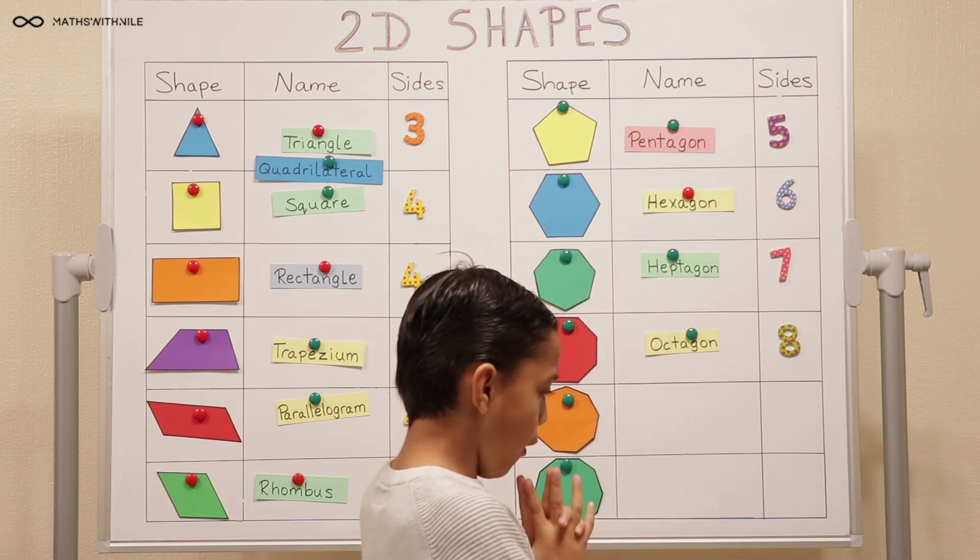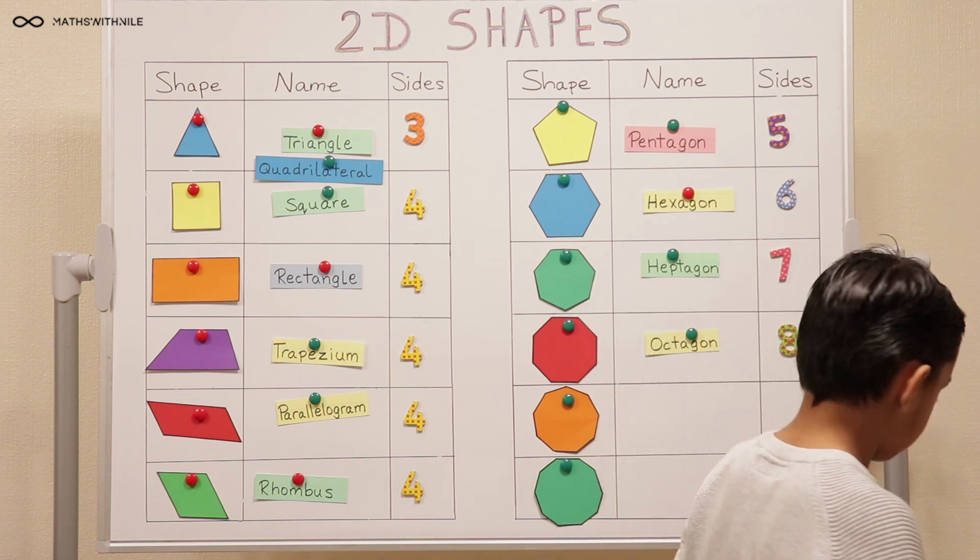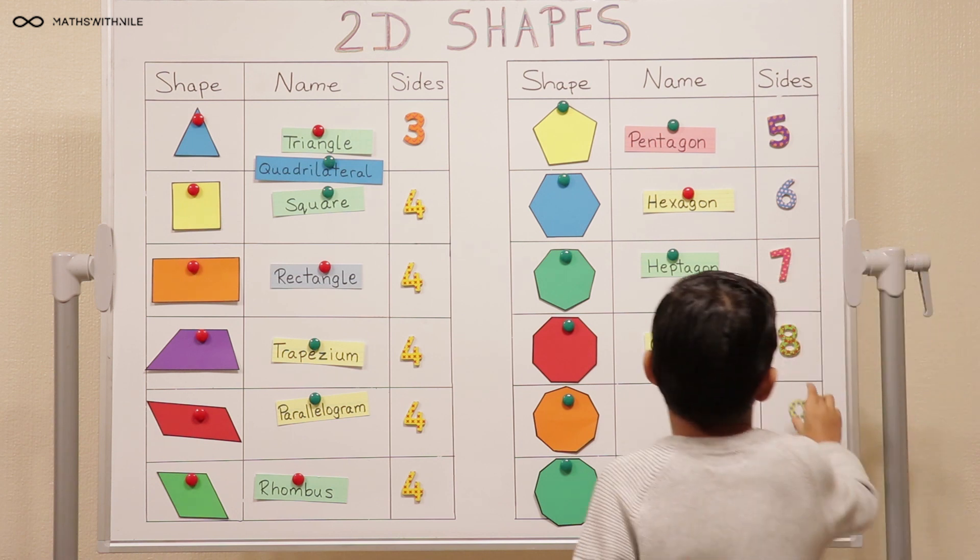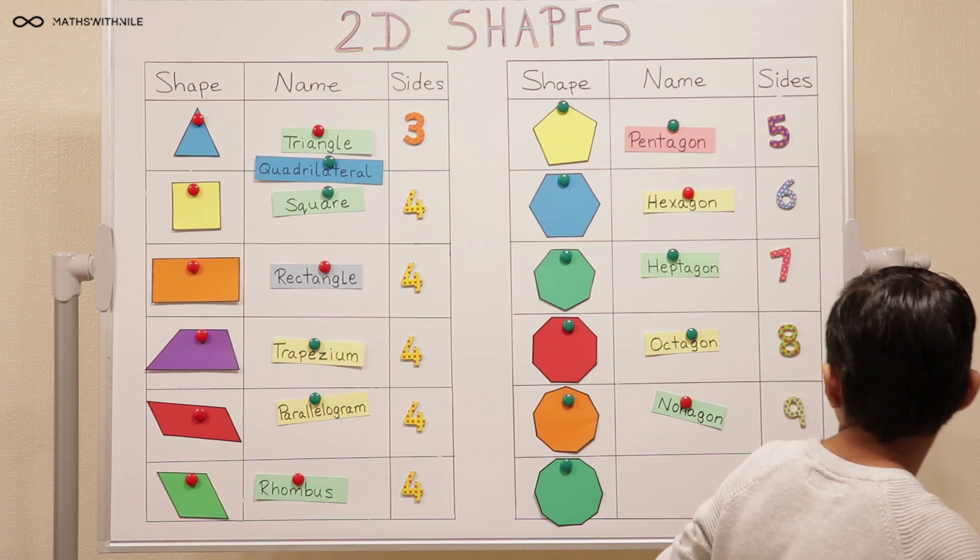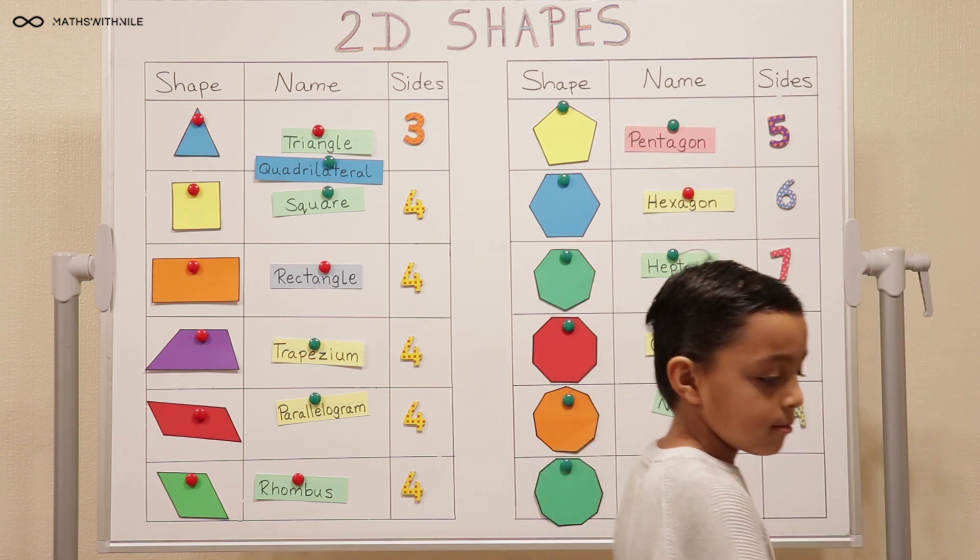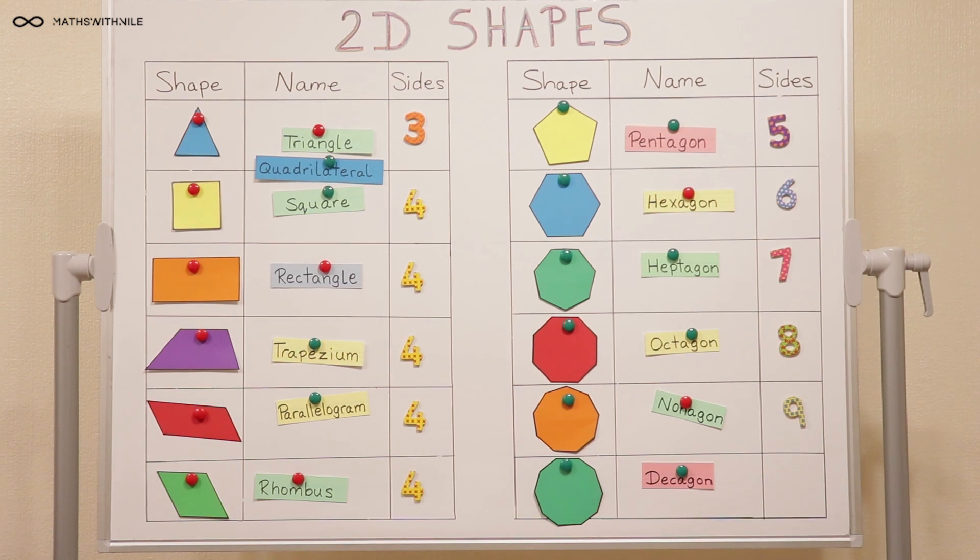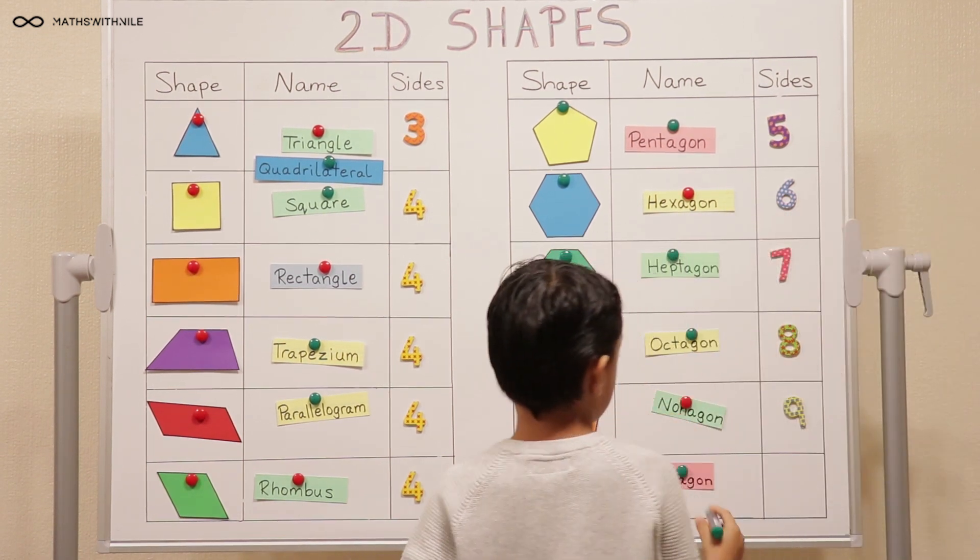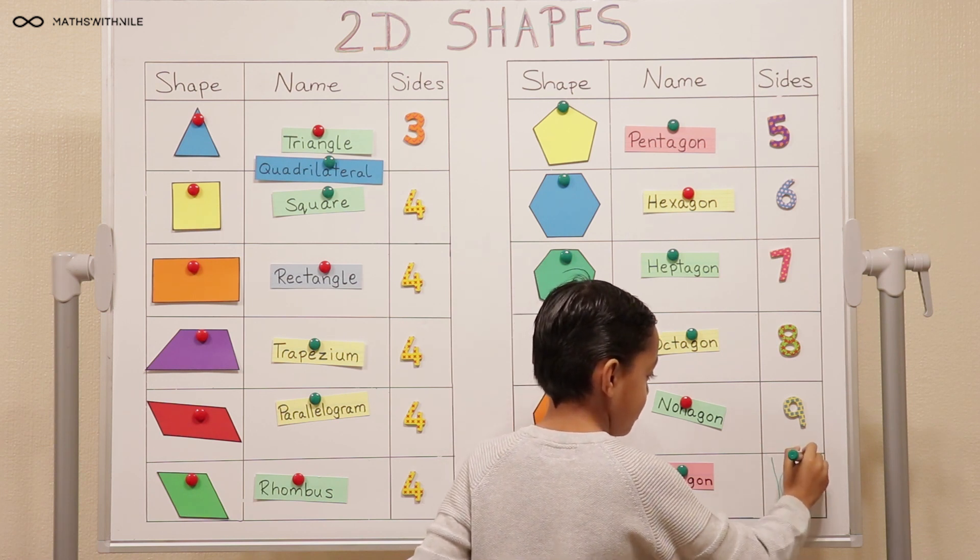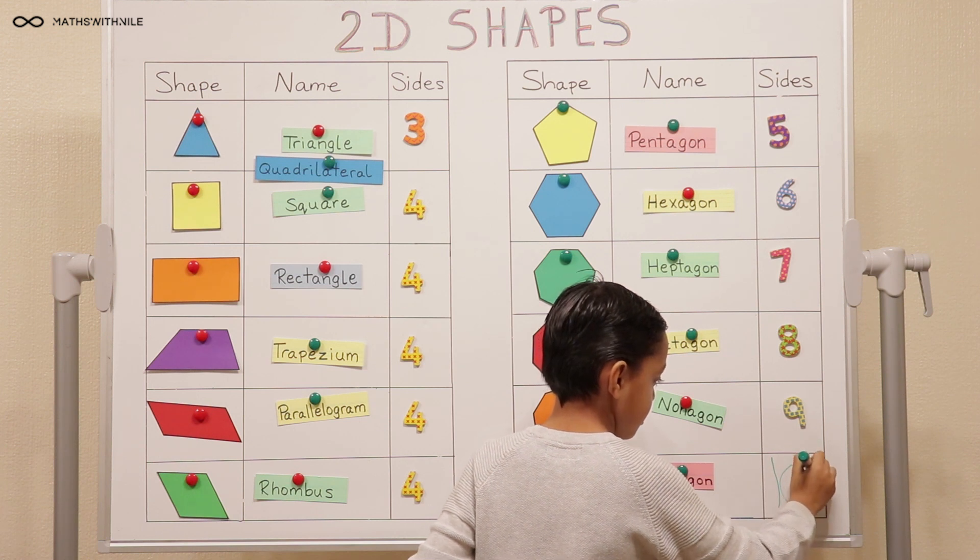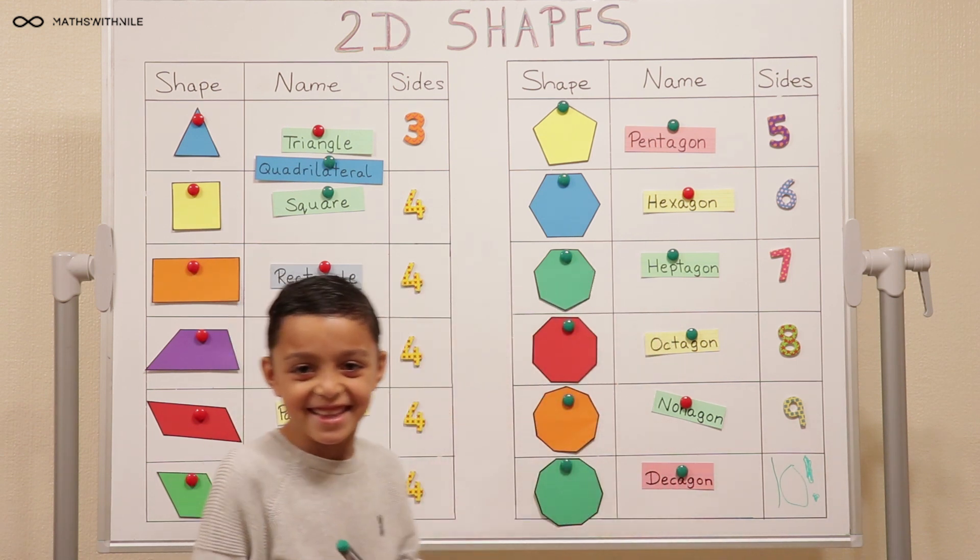Only two more to go. Decagon and Nonagon. So which one is? Look, do the nine sides first. Which one is nine sides? Nonagon. It's ten sides and you don't have the ten, so grab this pen here and write a ten. My favourite colour, green. Very good. Now it's time for a quiz.